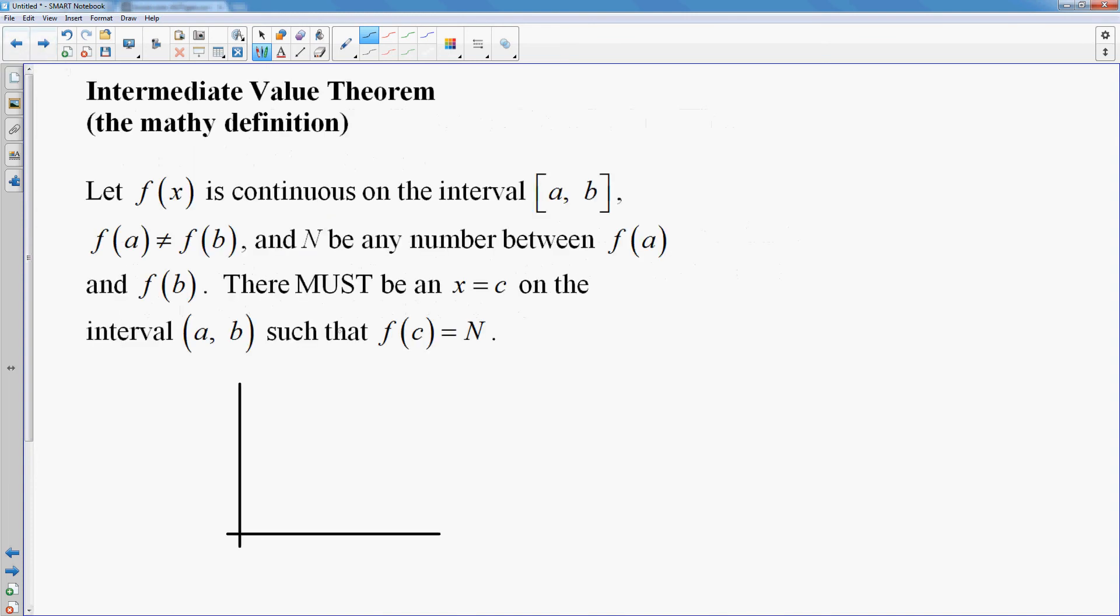The mathy definition: let f of x be continuous on the interval from a to b, and f of a is not equal to f of b. So let's graph this out. We have a, we have b, and I'll have f of a right here. That's just your y-coordinate of a. And you have to have an f of b that's not the same. Here's f of b. And your function is continuous. Now it doesn't tell you much more about the graph other than that the function is continuous. It could go up and come back down. It could go down and come up. It could go up and down and up and down and up. It could do a whole bunch of things, as long as the function is continuous between those two points.